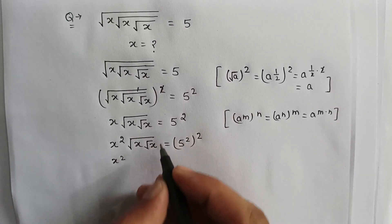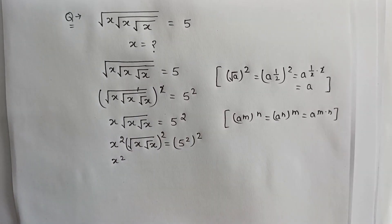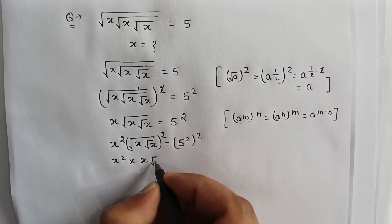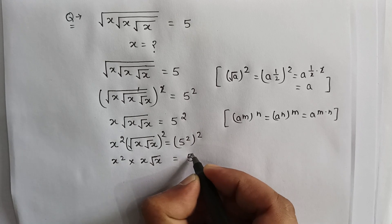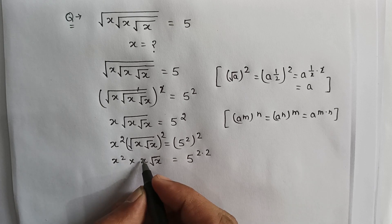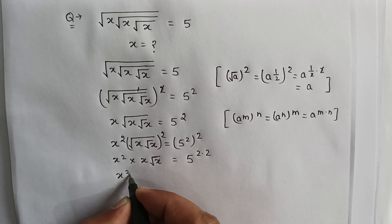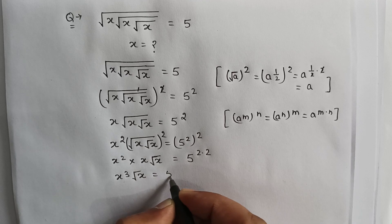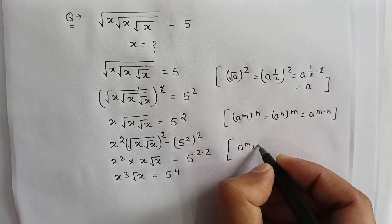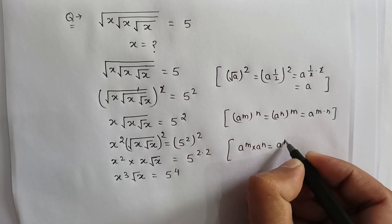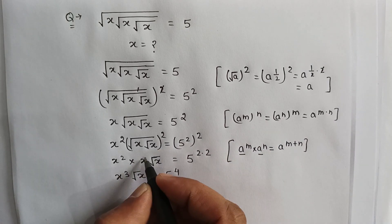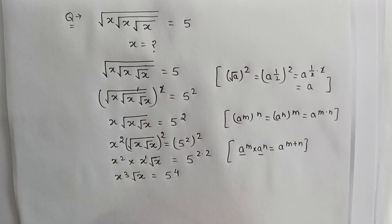Applying the rule (a^m)^n = a^(m×n), and since a^m × a^n = a^(m+n) when the base is the same, the powers are added. So we get x³ · √x = 5^4.